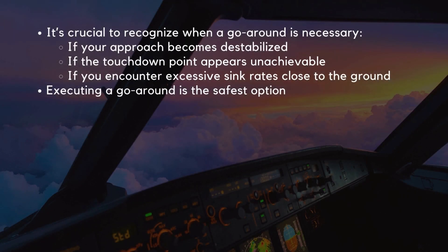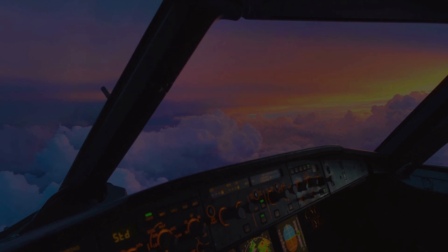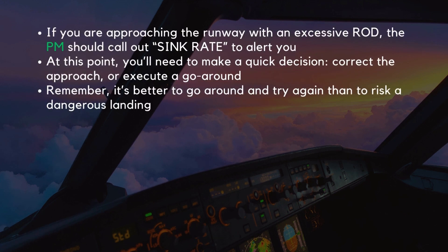It's crucial to recognize when a go-around is necessary. If your approach becomes destabilized, if the touchdown point appears unachievable, or if you encounter excessive sink rates close to the ground, executing a go-around is the safest option. For example, if you are approaching with an excessive descent rate, the pilot monitoring should call out 'sink rate' to alert you. At that point, you'll need to make a quick decision: correct the approach or execute a go-around. Remember, it's better to go around and try again than to risk a dangerous landing.